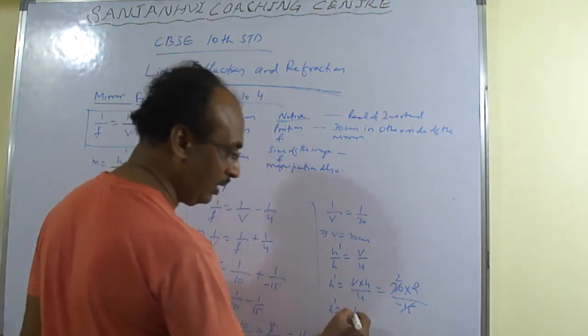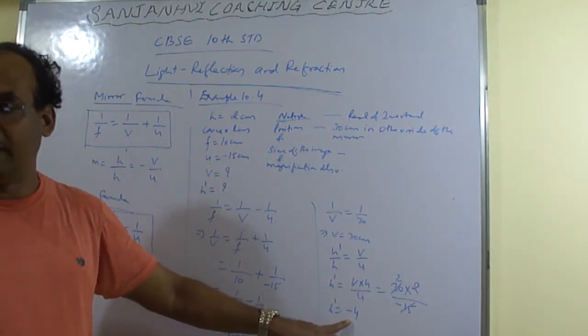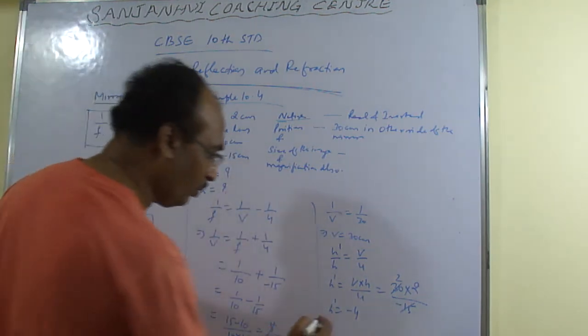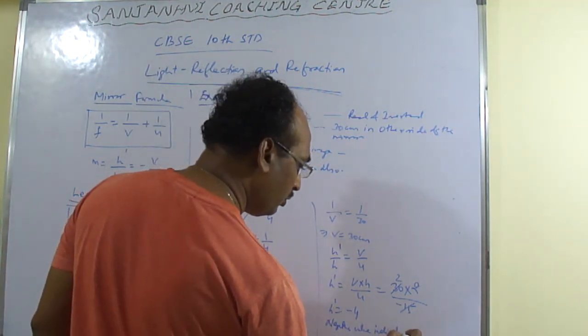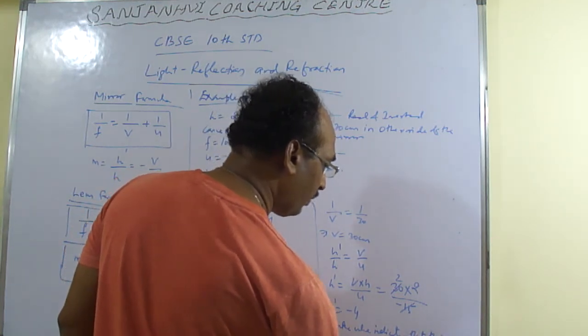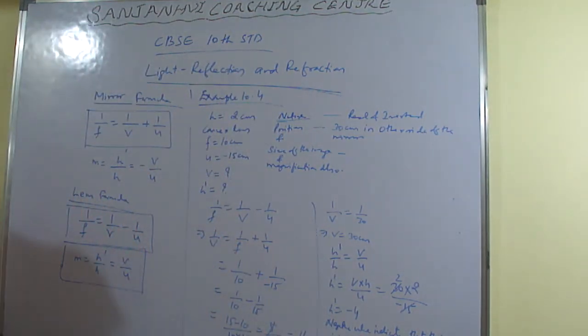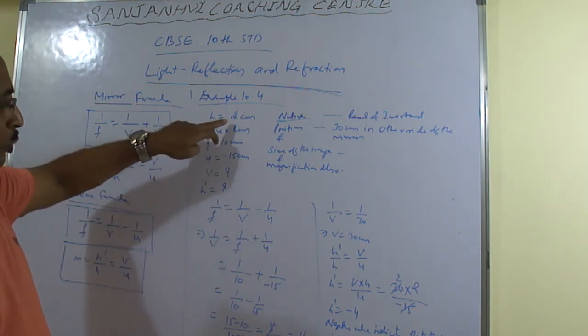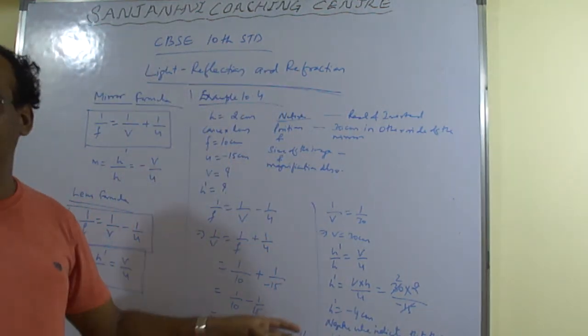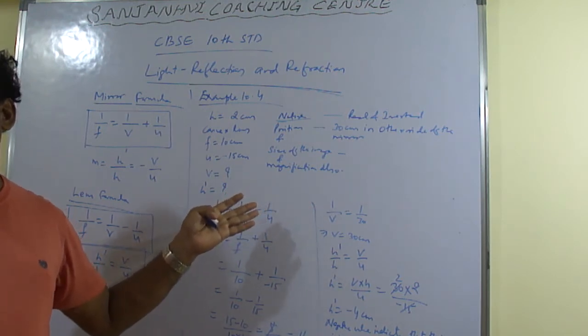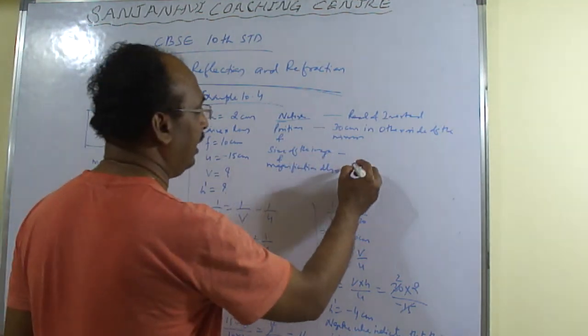Minus 4. Because it is inverted. Yes sir. It is real and inverted. So it has become minus 4. And the value indicates that it is inverted. Value indicates that the image is inverted. And now object is 2 cm. And height of the image is 4 cm. Height of the image. So that it is enlarged. It is enlarged. Here I have inverted. And that image has become enlarged. So you can say enlarged.